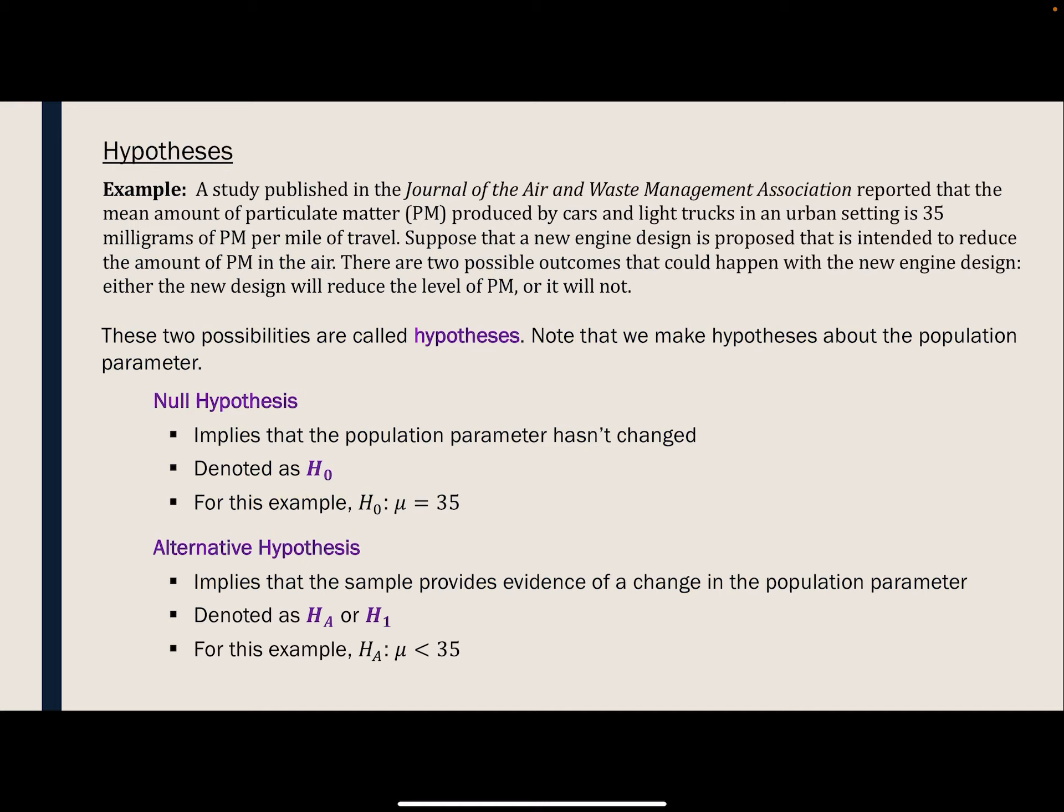So in any scenario, we're going to have two hypotheses. The null hypothesis and the alternative hypothesis. Null in mathematics means zero. So if you have a null set, it means that there's nothing in it. The null hypothesis implies that nothing has changed. And we use a sub-zero to denote the null hypothesis. So in the example above, the null hypothesis was that this new engine doesn't actually change the mean amount of particulate matter in the air. And so it would look like H sub-zero, the null hypothesis, is that mu is still equal to 35. The null hypothesis will always use an equal sign.